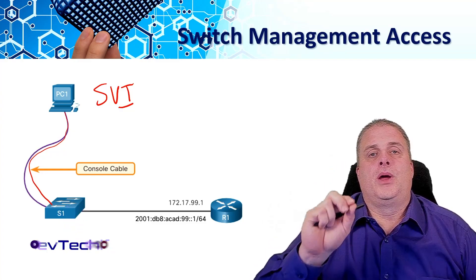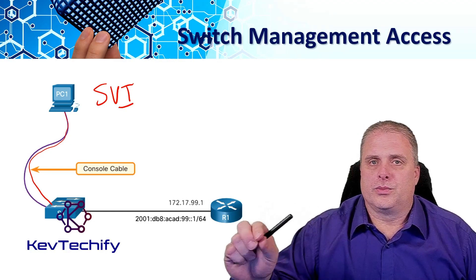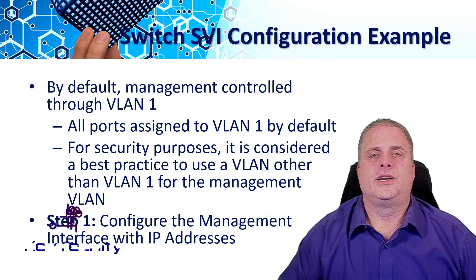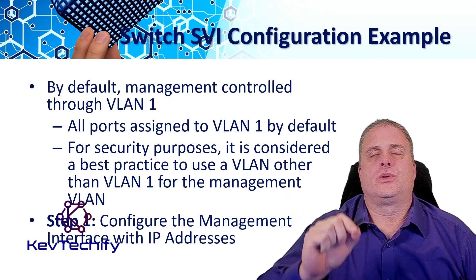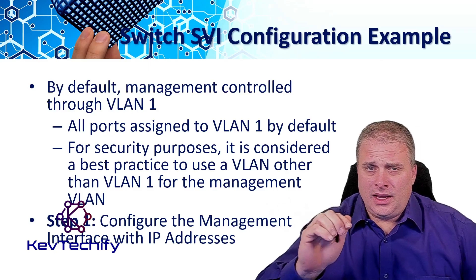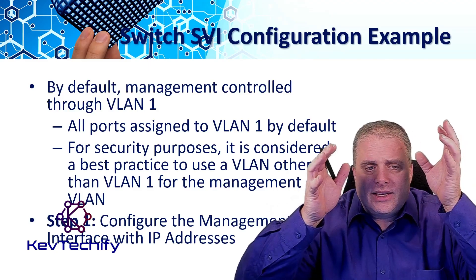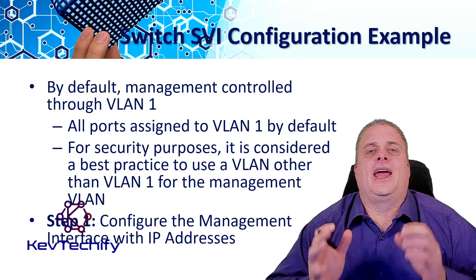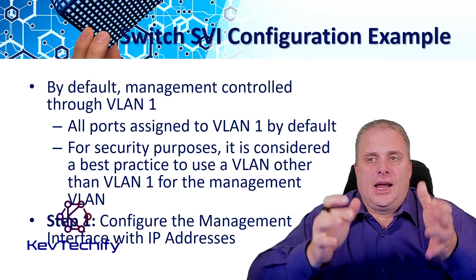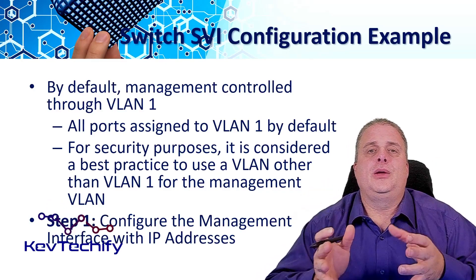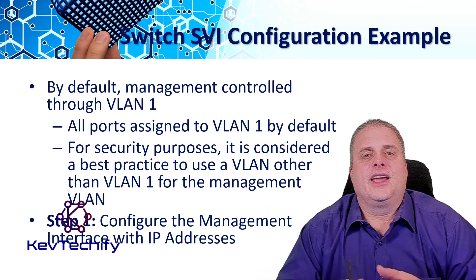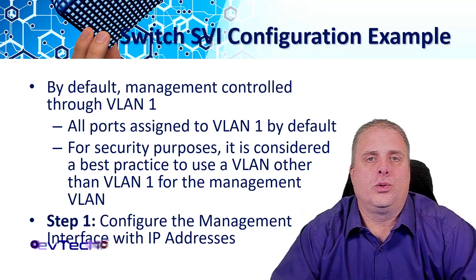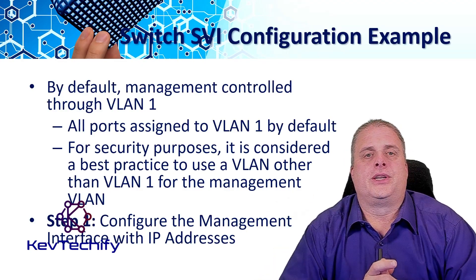If you want to manage your switch from a remote network going through routers on a different network, you also have to set up the default gateway. By default, management is controlled through VLAN 1, and all ports are assigned to VLAN 1. It is highly recommended for security that you do not use VLAN 1. Choose something else as your management VLAN. Because VLAN 1 is the default, attackers know there's a good chance it's where all your ports are located. Moving to a different VLAN helps protect your system.